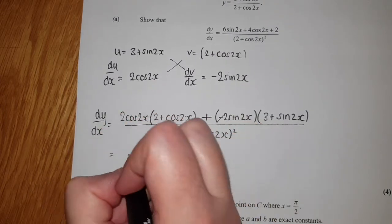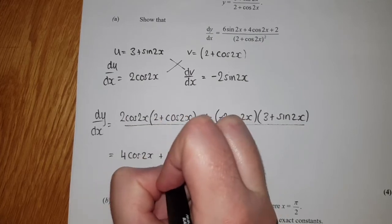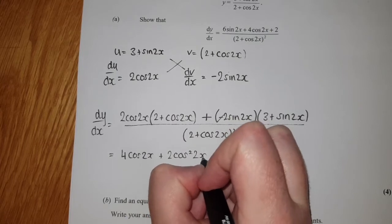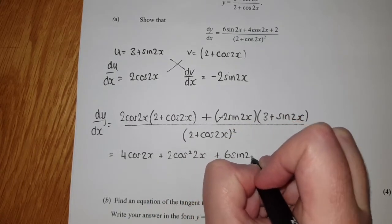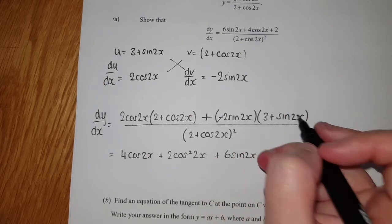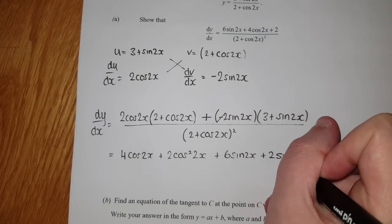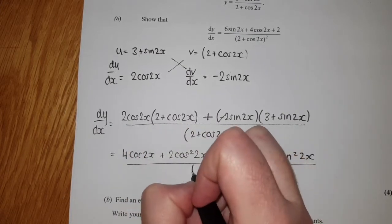That then means expanding the top brackets: I get 4cos(2x) + 2cos²(2x) + 6sin(2x) + 2sin²(2x) over, and the bottom stays.